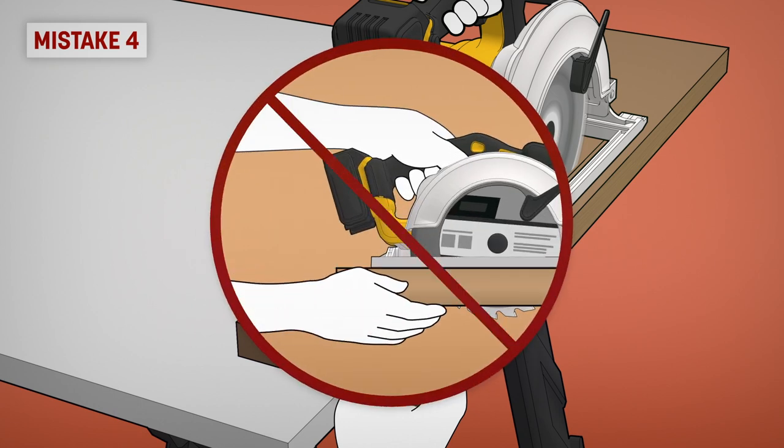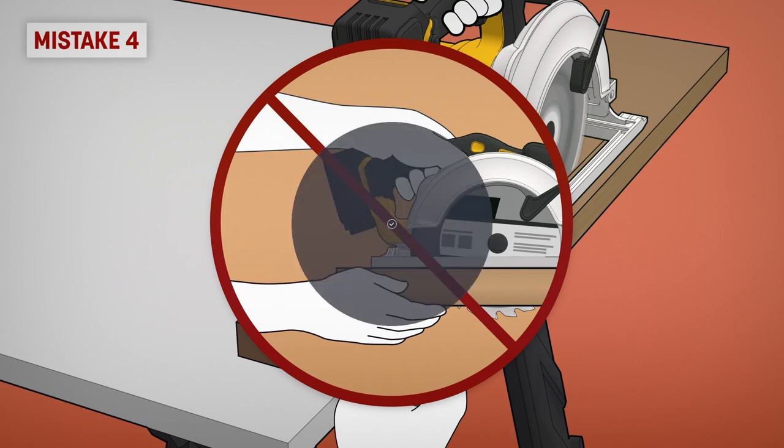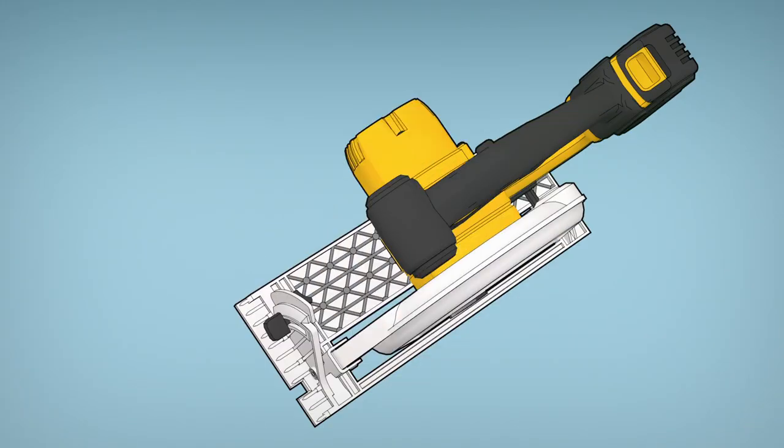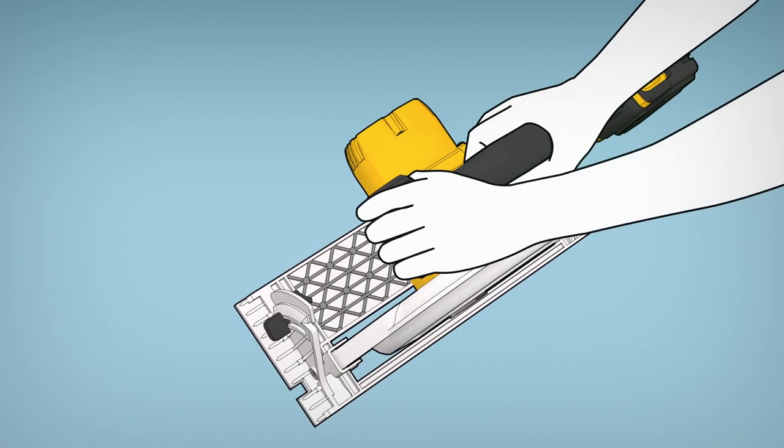Don't ever place your fingers under the workpiece. In this position, the guard will not protect you. You have to maintain a firm grip with both hands while cutting. If both hands are holding the saw, they cannot be cut by the blade.